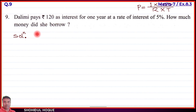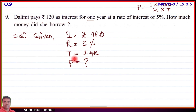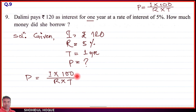Given: I = rupees 120, R = 5 percent, T = 1 year. We need to find P (principal — the money borrowed). Let's write the given values and solve for P.